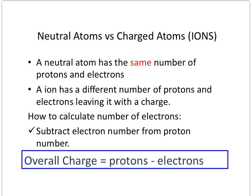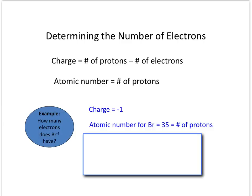Many atoms of an element are neutral, meaning that they have no charge. That means that the positively charged protons must be the same number as the negatively charged electrons. However, we do have ions as well. An ion is an atom with a charge because it has a different number of protons compared to electrons. It can be positively charged or negatively charged. To calculate the number of electrons, we use the formula: overall charge equals protons minus electrons.